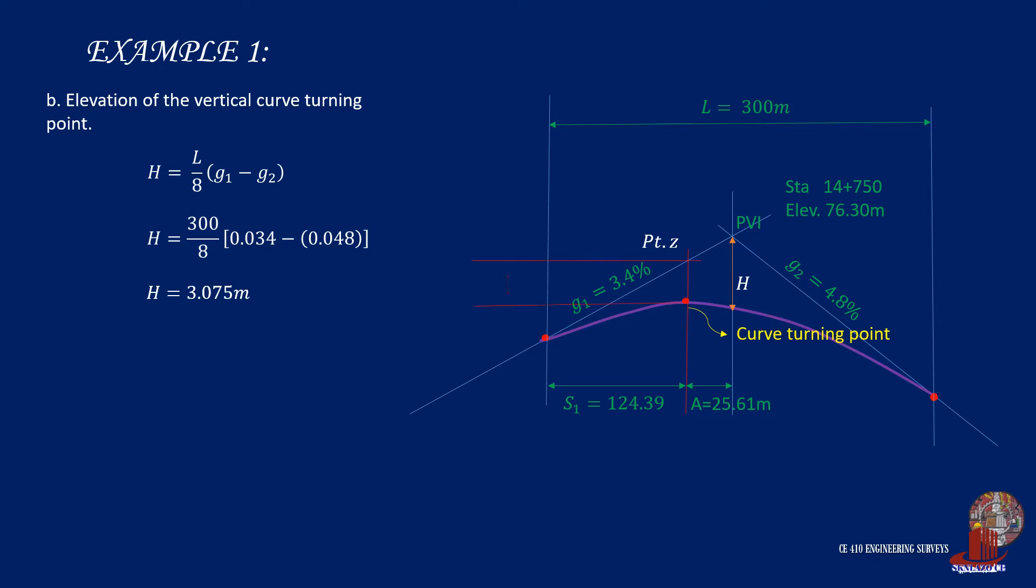Now using the proportionality, Y can be computed as 2.11 meters. Note that Y is the difference of elevation from the tangent to the summit of the curve.